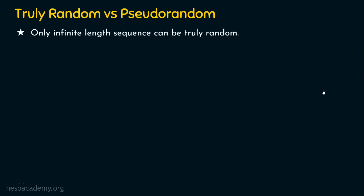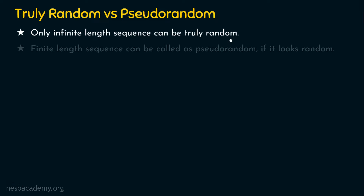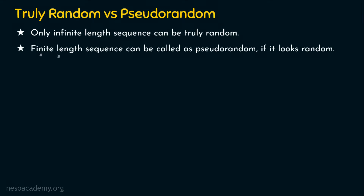It is possible for a sequence to be truly random only if the length is infinite. Only infinite-length sequences can be truly random. Whatever is generated from a machine is expected to be finite, and a finite-length sequence cannot be called truly random — it can be called pseudo-random if it looks random. With this note, let's see Golomb's randomness postulate.